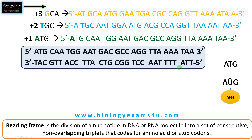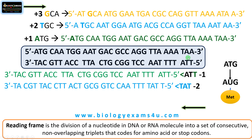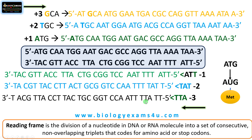Now let us see the reading frames of the complementary strand. This also should be read in the 5' to 3' direction. So we should start from the reverse end of the strand. If we begin with the first nucleotide, the thymine base, the reading frame is TTA, TTT, TAA, like that. If we begin with the second nucleotide, the second thymine base, the sequence is TAT, TTT, AAC, like that. If we begin with the third nucleotide, the adenine base, then it will be ATT, TTA, ACC, like that.